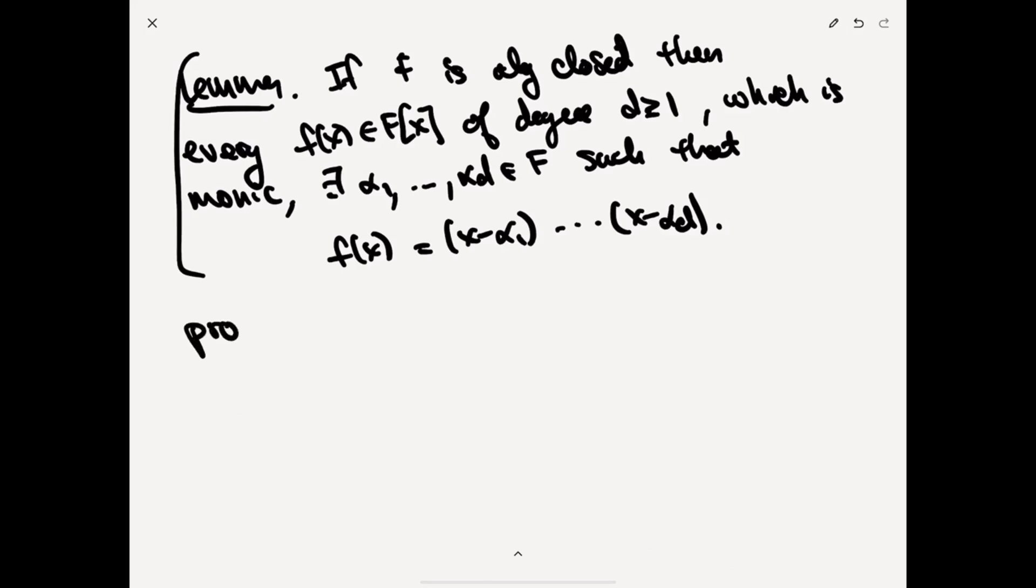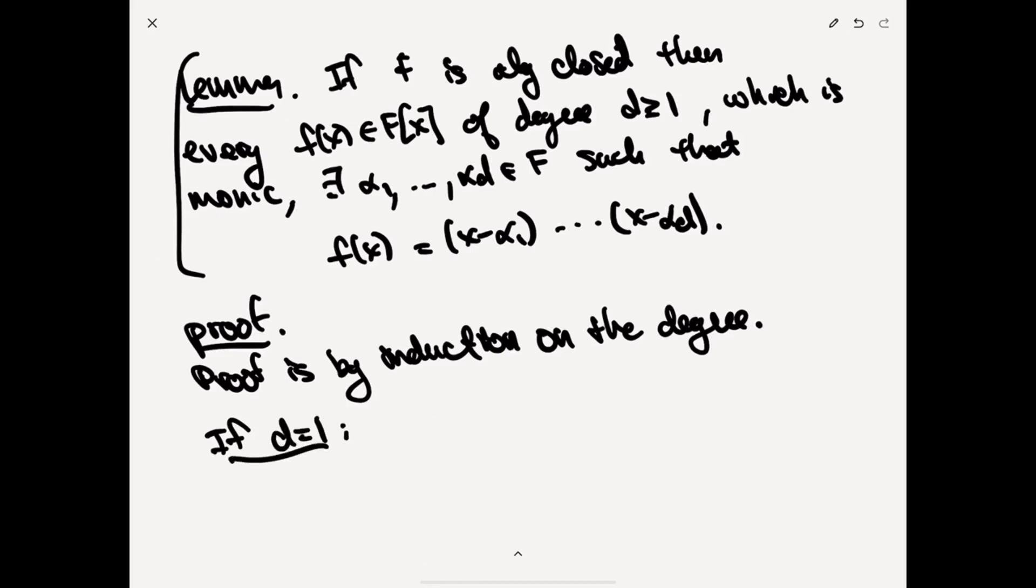for every monic F, there exists alpha one through alpha D in F such that F of X is X minus alpha one times X minus alpha D. So let's do the proof of this. The proof is by induction on the degree. If the degree is one, that's the base case, well, then since it's monic, F of X looks like X minus alpha, and we're done.